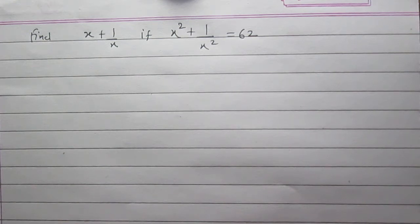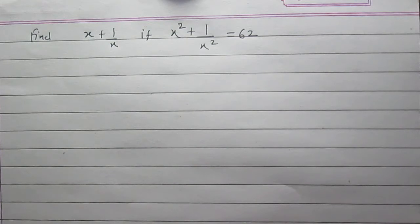Find x plus 1 upon x if x square plus 1 upon x square is equal to 62. We are given the value of x square plus 1 upon x square, it is 62, and we are to find x plus 1 upon x.